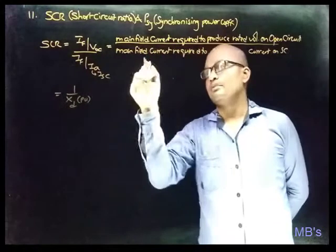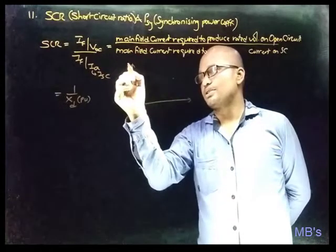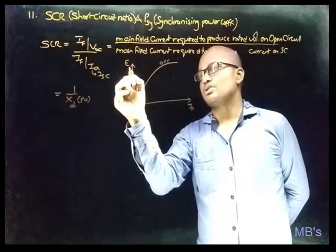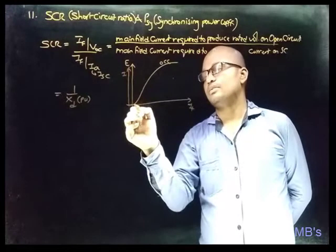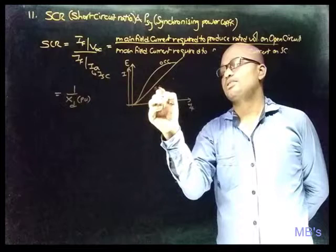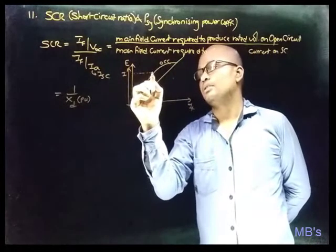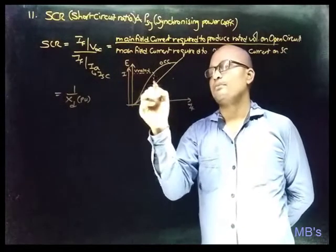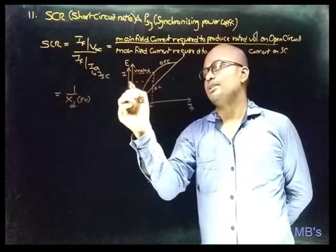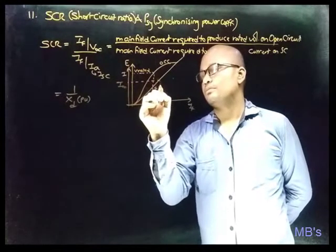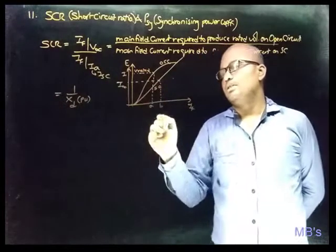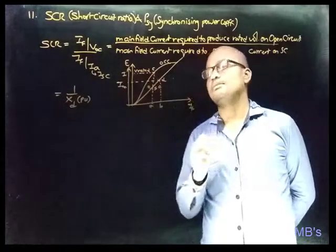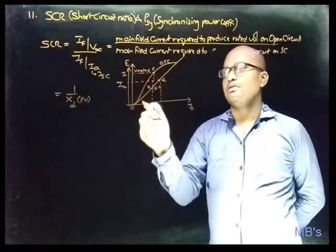This is obtained from the open circuit characteristics and short circuit characteristics. From the graph, the open circuit characteristics curve and short circuit characteristics curve are shown. Let the rated voltage point be at D, V-rated, with the corresponding field current being OA. Let the rated current point on the short circuit curve be at point P, with the field current OB, and other reference points C, D, and E marked accordingly.